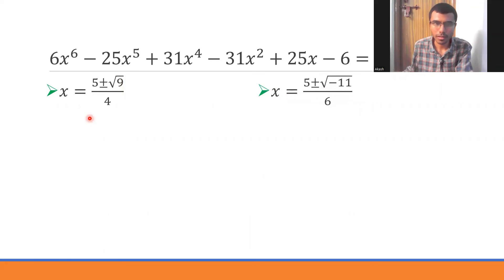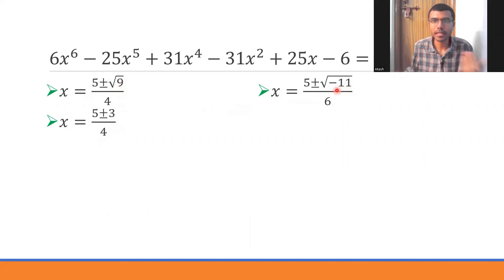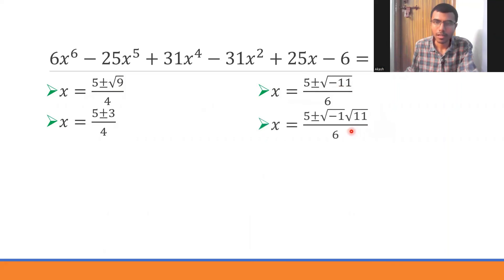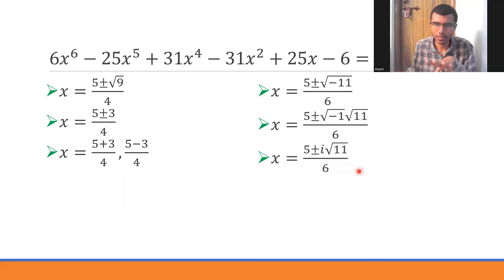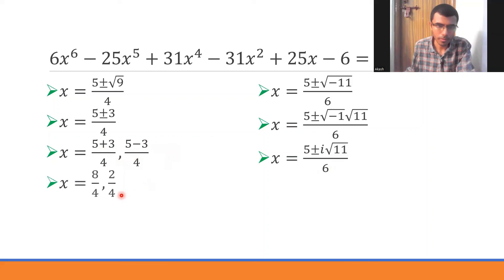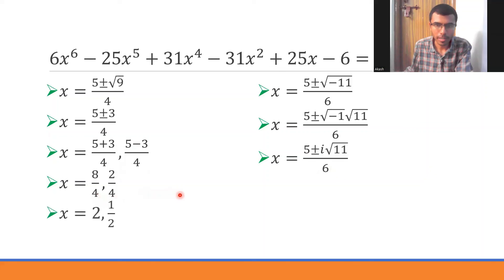For the first quadratic, √9 = 3, giving roots x = 2 and x = 1/2. For the second, √(-11) = i√11, giving complex roots x = (5 ± i√11)/6. We now have all six roots of the original 6th-degree polynomial.